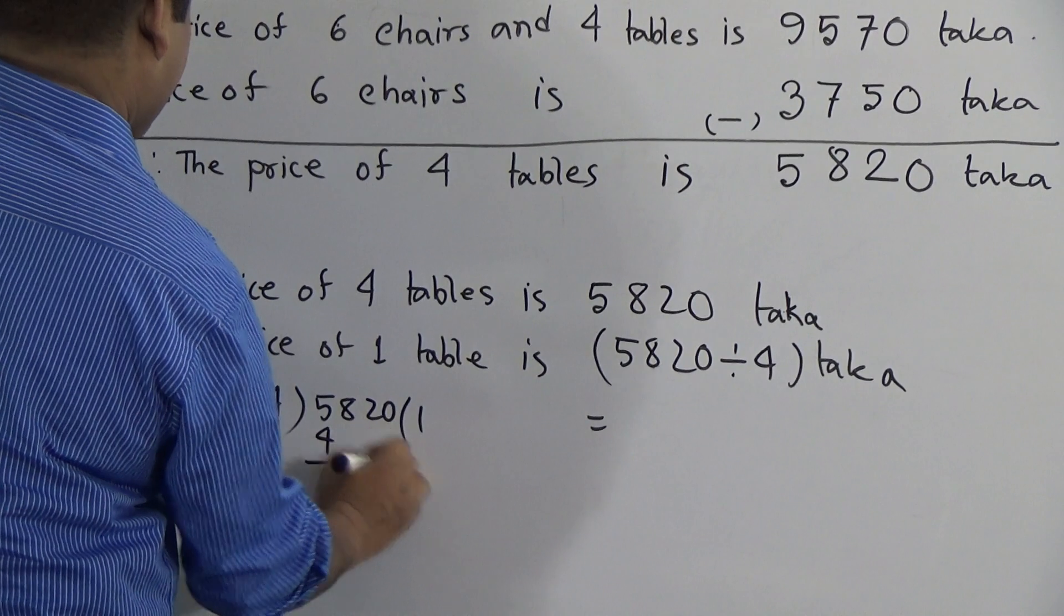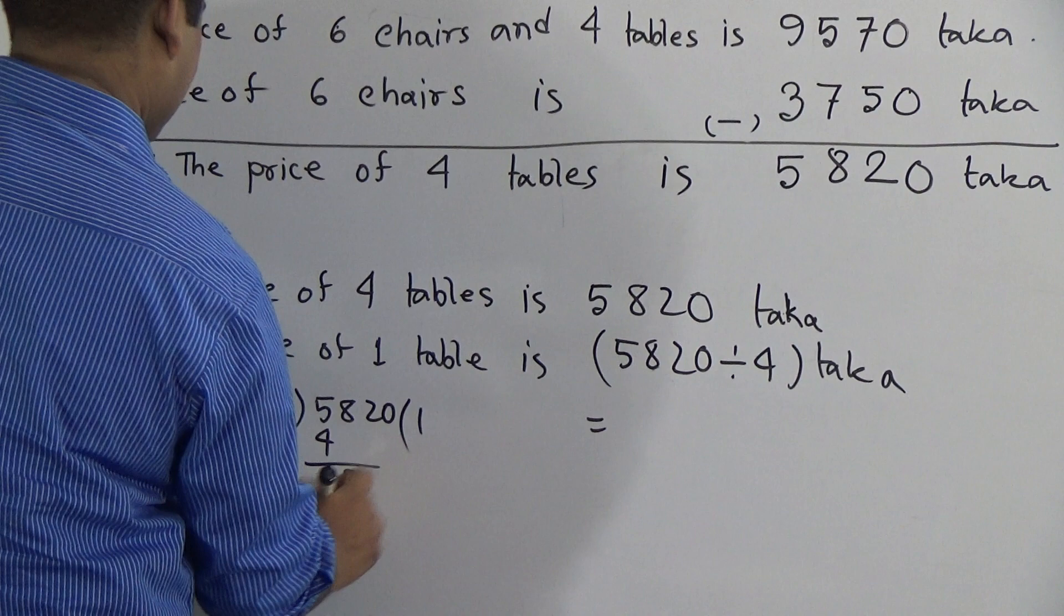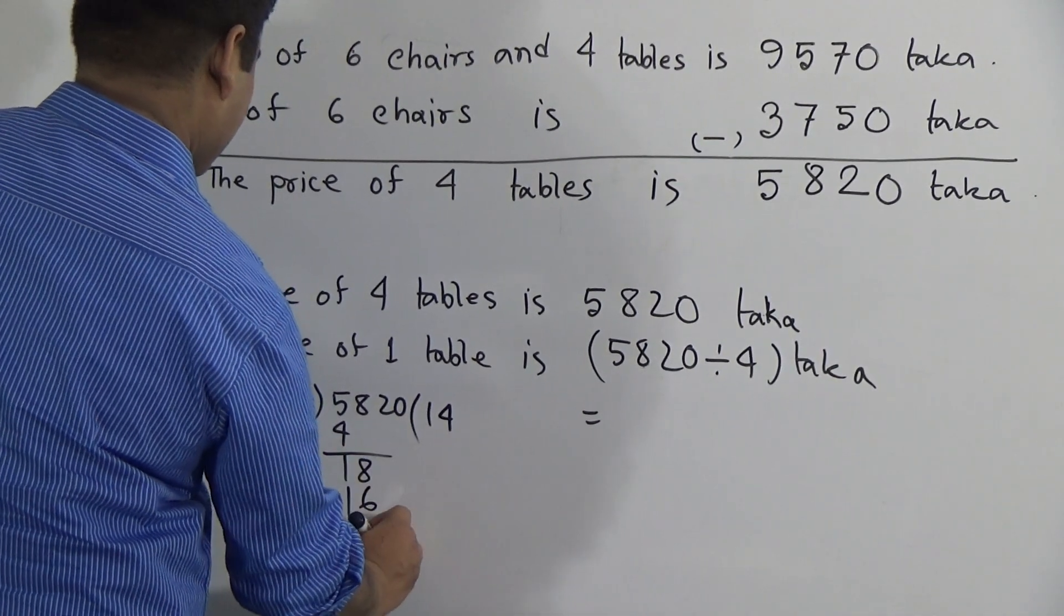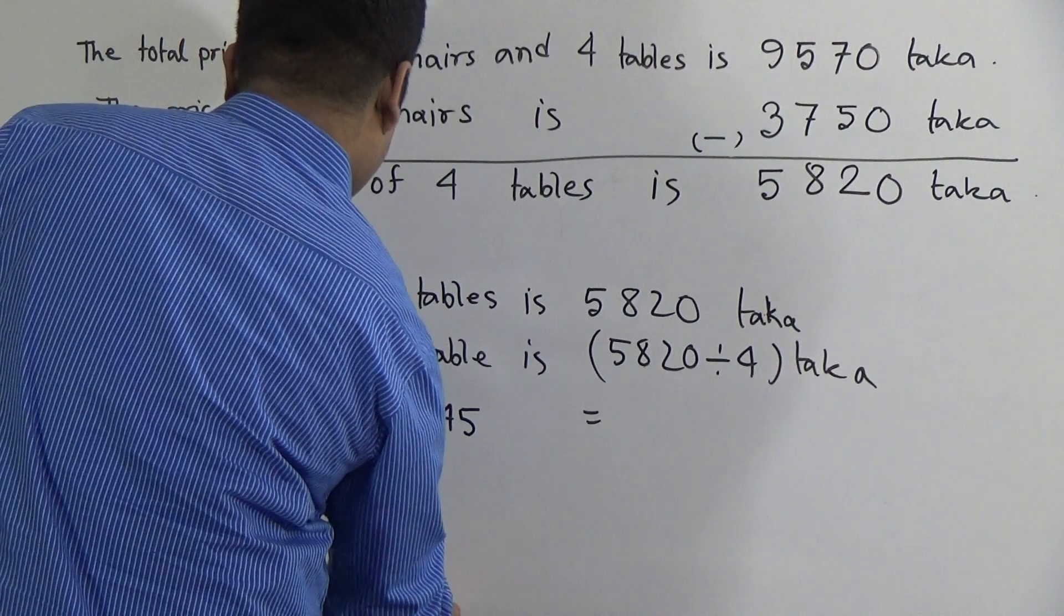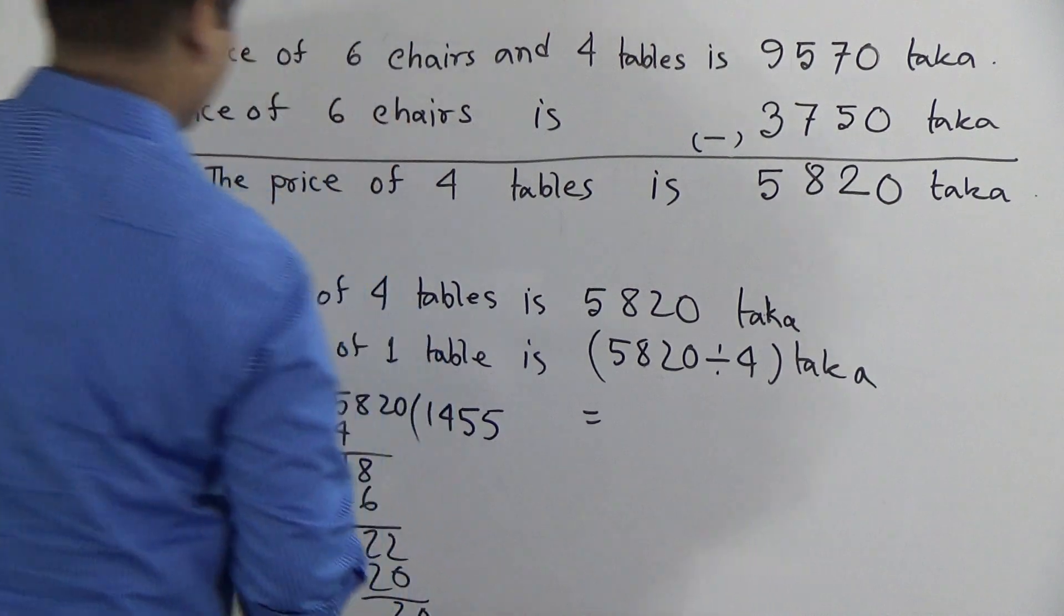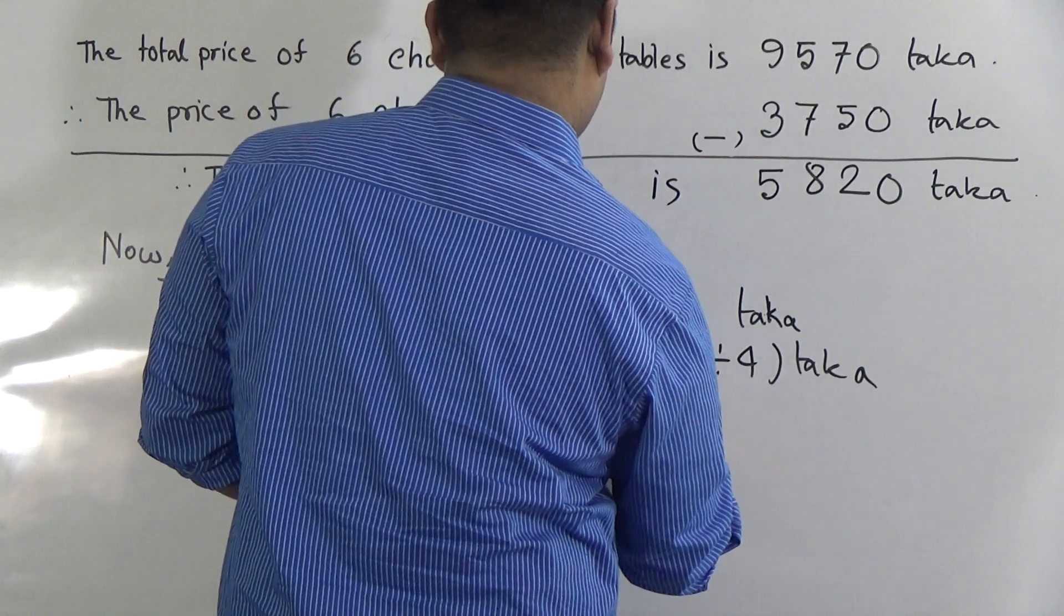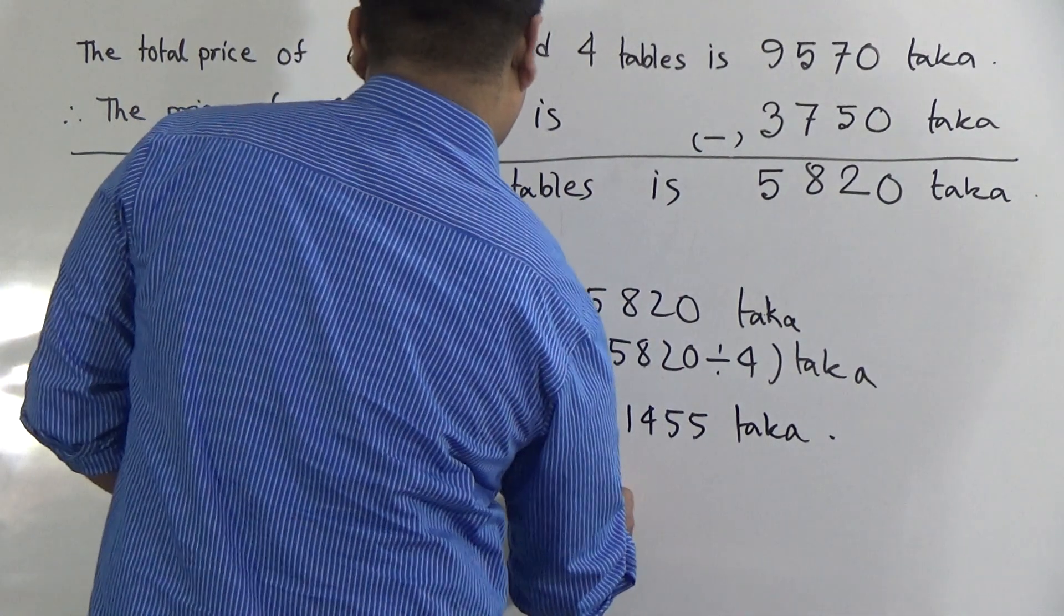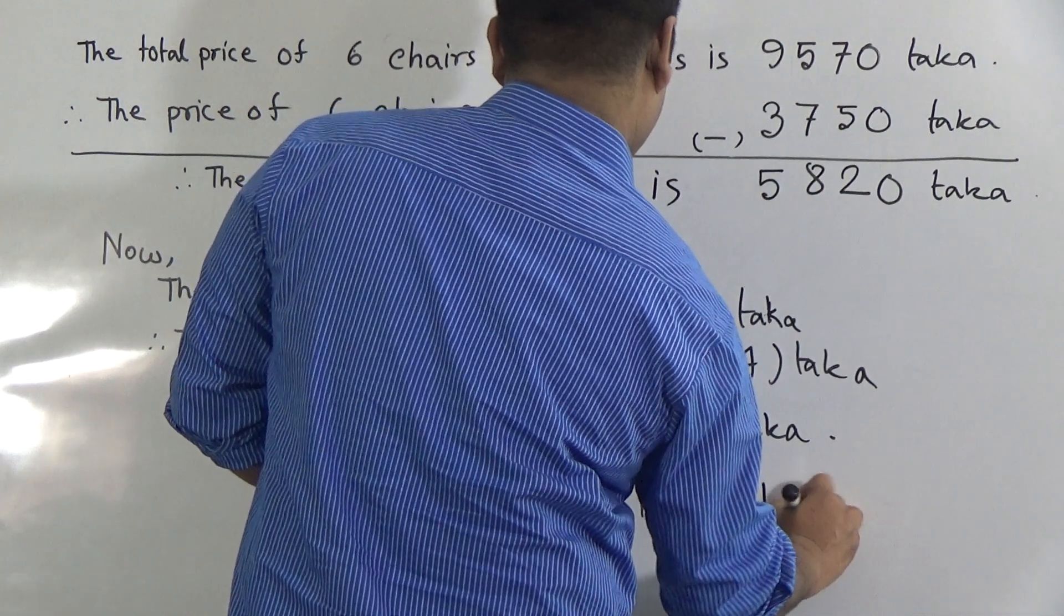4 into 5820. 4 into 5 goes 1 time, subtract 4 from 5, we get 1. Bring down 8, making 18. In 18, 4 goes 4 times. 4 times 4 is 16. Then 2 and 2. 4 fives are 20. So 1455, 1455 taka is the price of one table. And it is the answer of this question, 1455 taka. I hope you have understood this question.